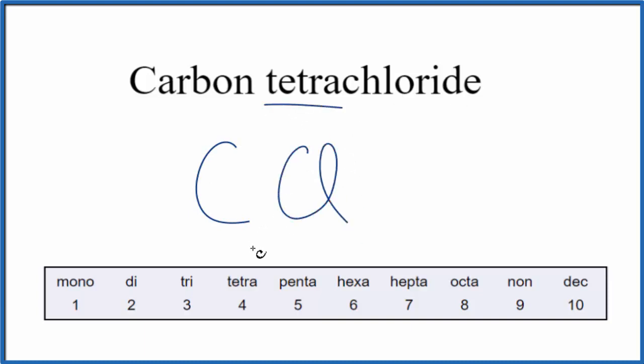And then tetra, tetra means 4. So we're going to put 4 after the Cl. And the formula for carbon tetrachloride is CCl4.